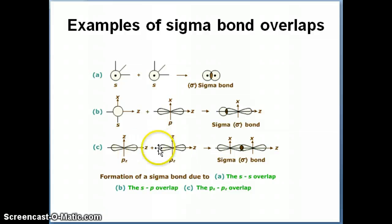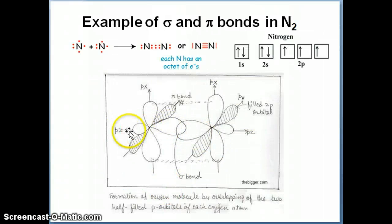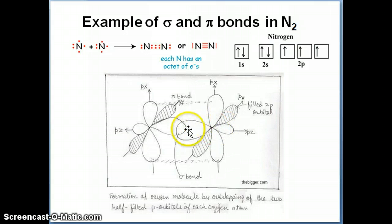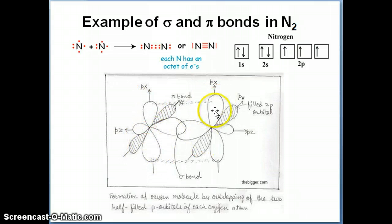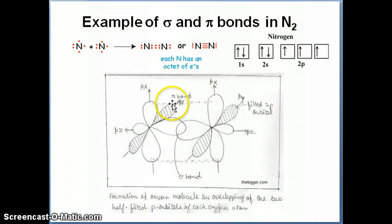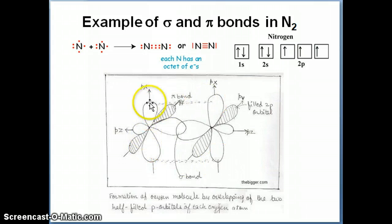The pz–pz overlap is an end-to-end overlap right in the middle between the two nitrogen atoms, forming a sigma bond. The px–px overlap, on the other hand, is a side-to-side overlap. This type of overlap is usually indicated by drawing dashed lines across the two orbitals, and that overlap between the two px orbitals forms one pi bond.